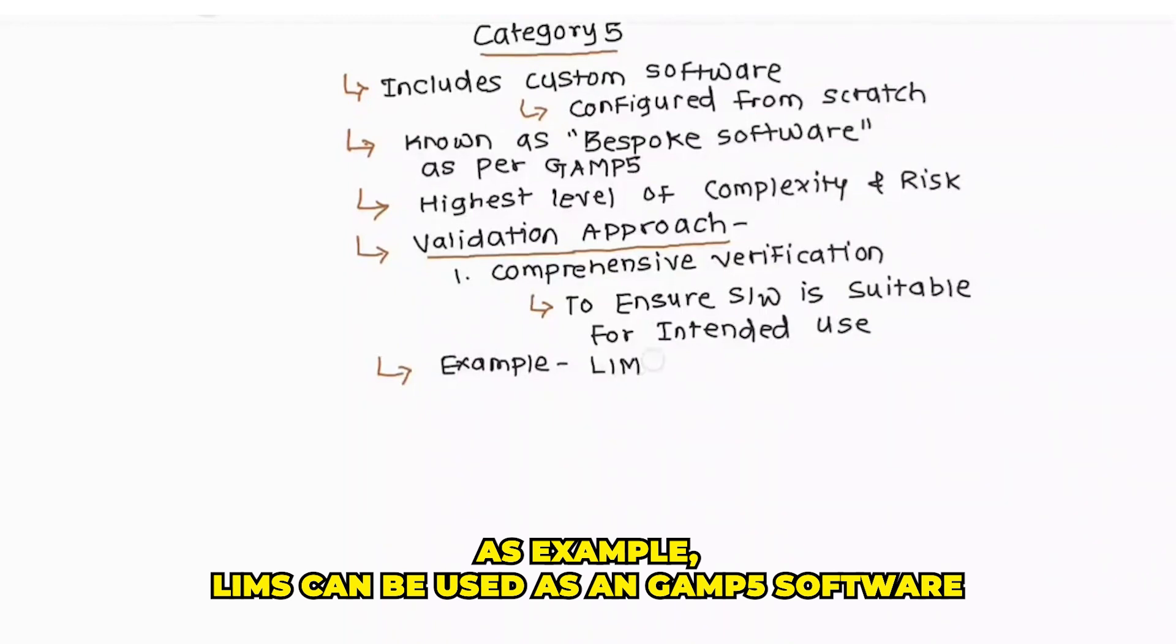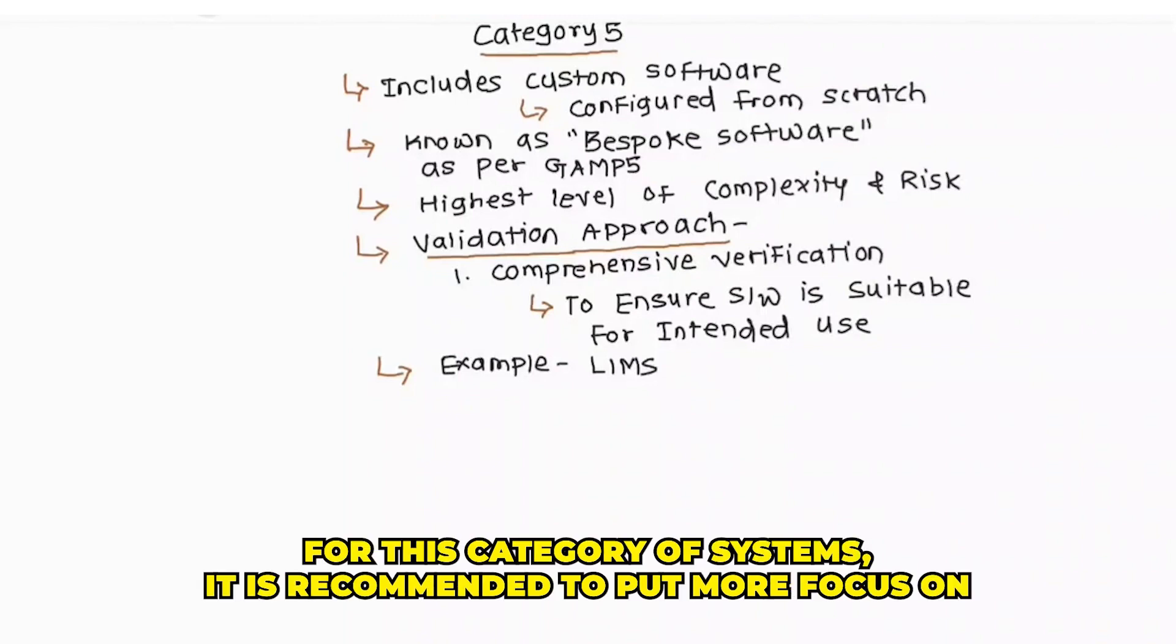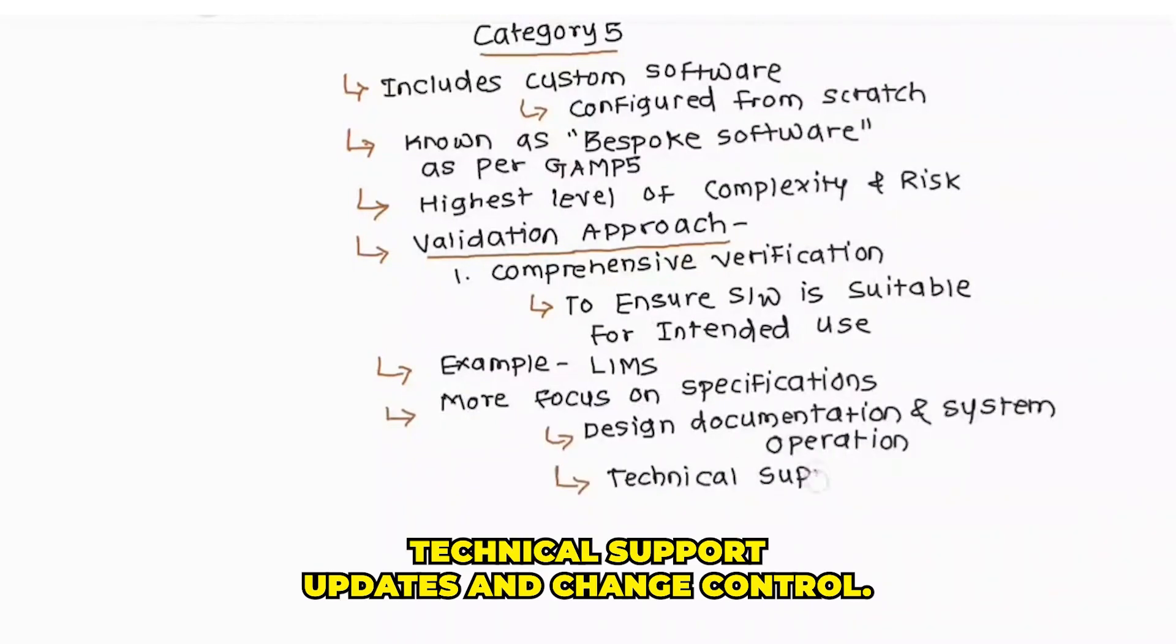For example, LIMS can be used as a GAMP 5 software. In the validation strategy for this category of systems, it is recommended to put more focus on specification and testing modules, design documentation and system operation, technical support, updates, and change control.